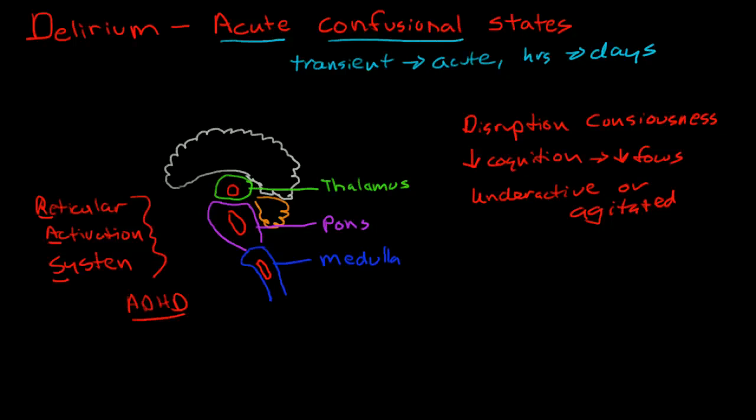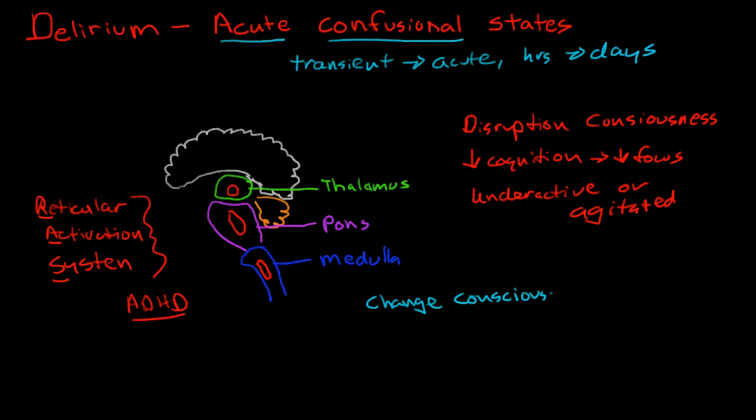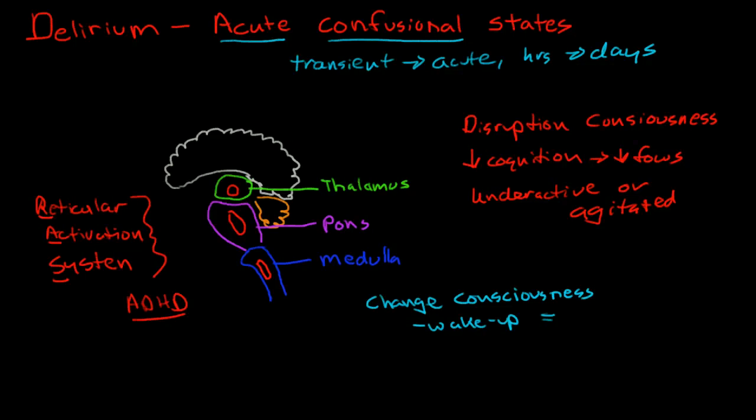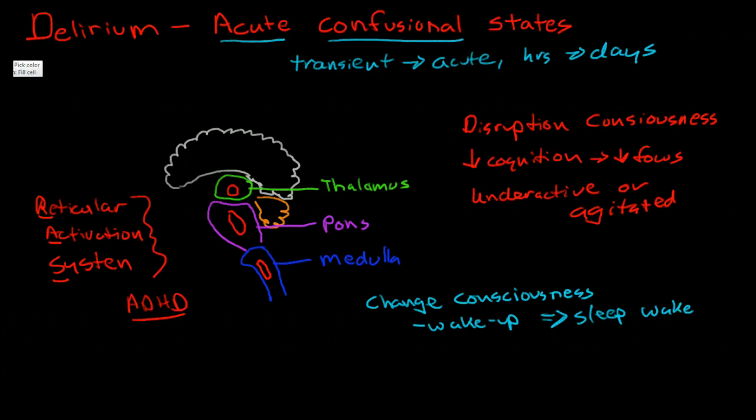So what is causing this? The reticular activating system is responsible for helping us change states of consciousness. The reticular activating system is the system that helps us wake up in the morning and stay awake and alert all day and fall asleep at night. It is changes to this reticular activating system that helps us change our level of consciousness or the sleep-wake cycle. And it is also the reticular activating system that allows us to direct our attention.